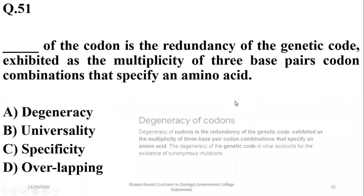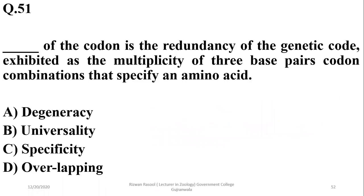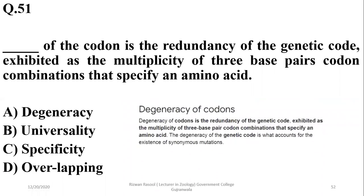Question 51: The redundancy of the genetic code, exhibited as the multiplicity of three-base codon combinations that specify an amino acid, is known as code degeneracy. So A is the right option — redundancy of the genetic code is known as degeneracy of the codon.